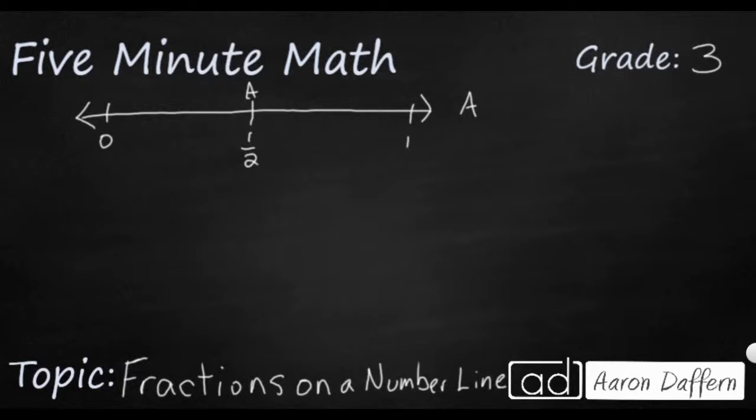If you're not sure, though, what you could do is you can always count the number of spaces between zero and one. So in this case, we've got one space, two spaces. So we've got two spaces, and that's going to be your denominator, because your denominator shows you how many total spaces you have.